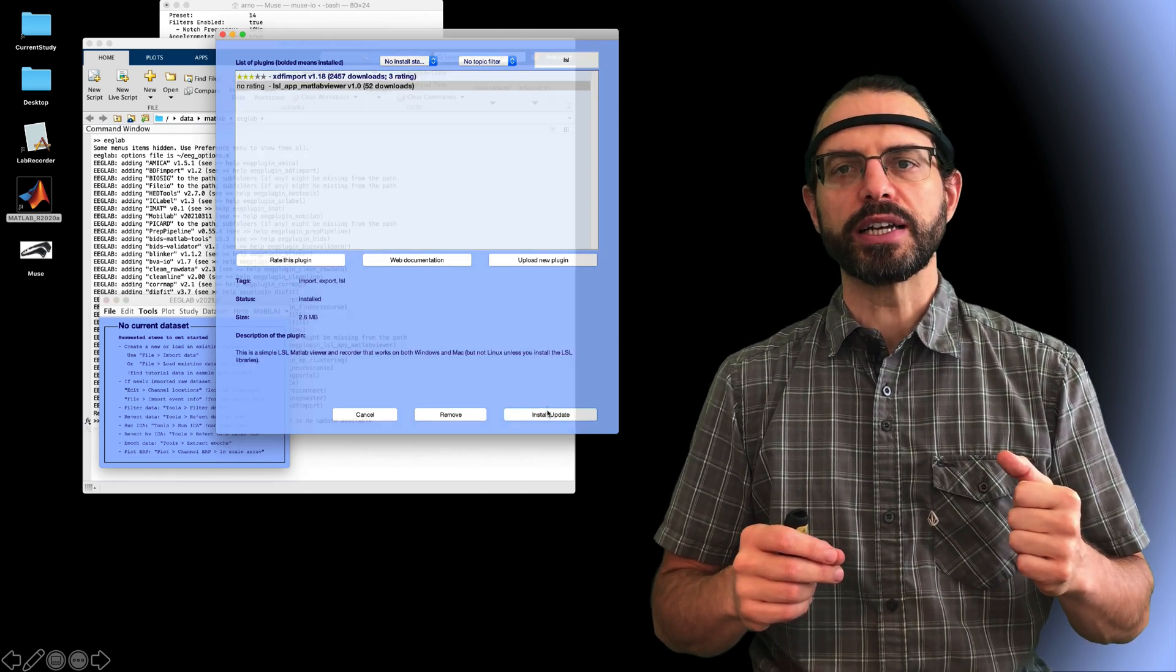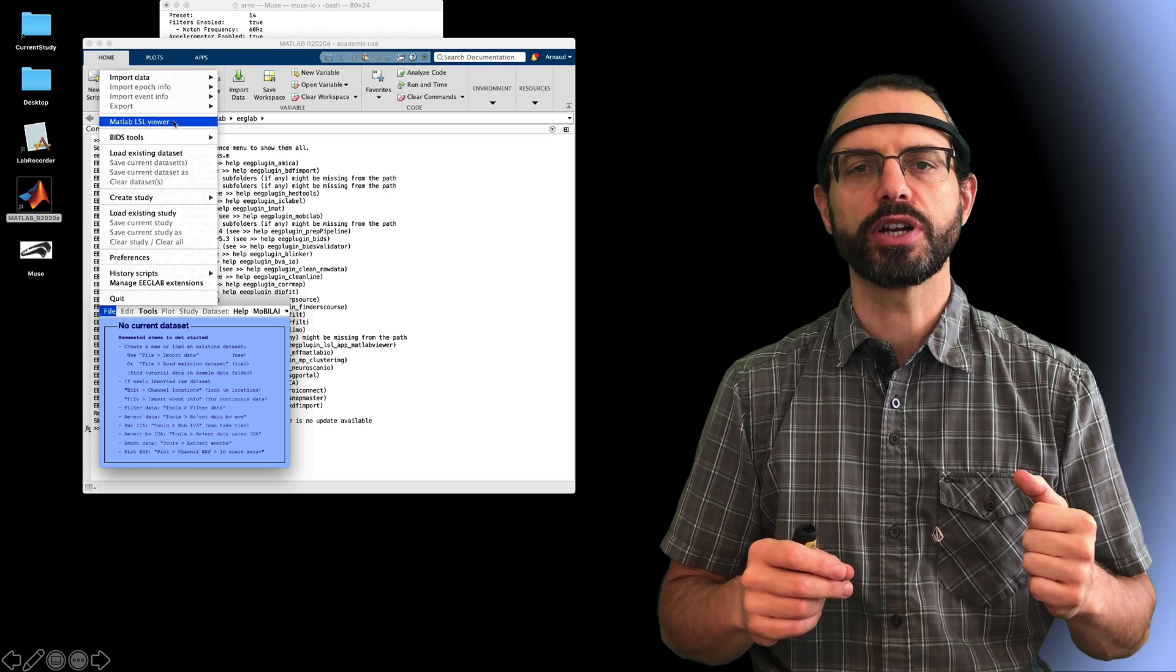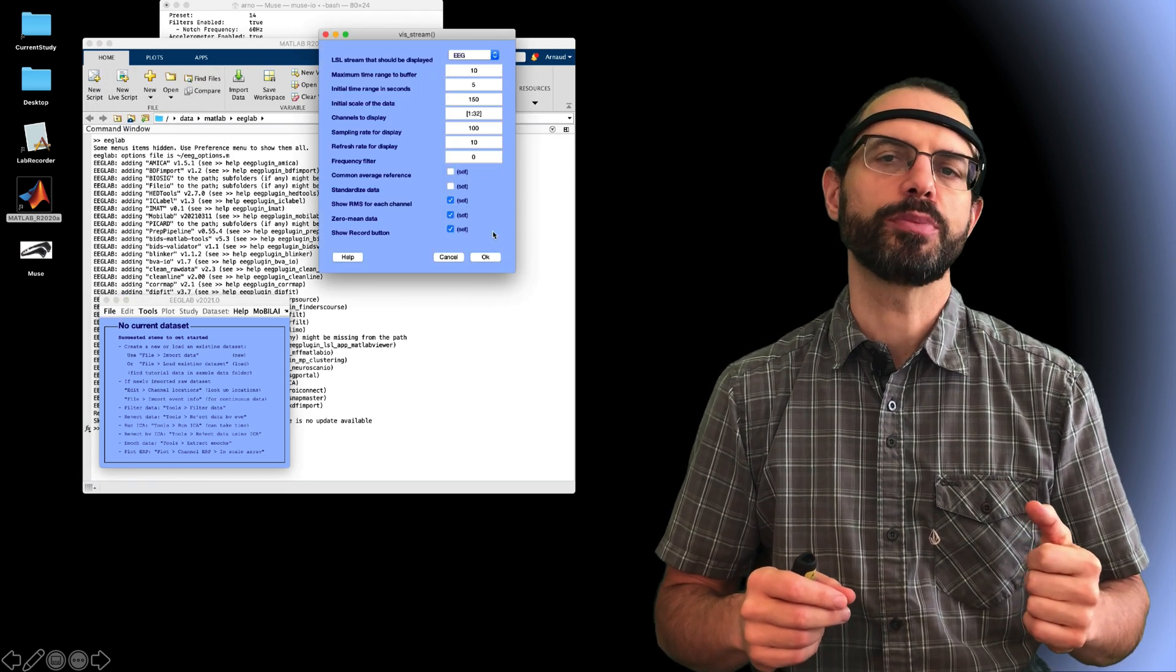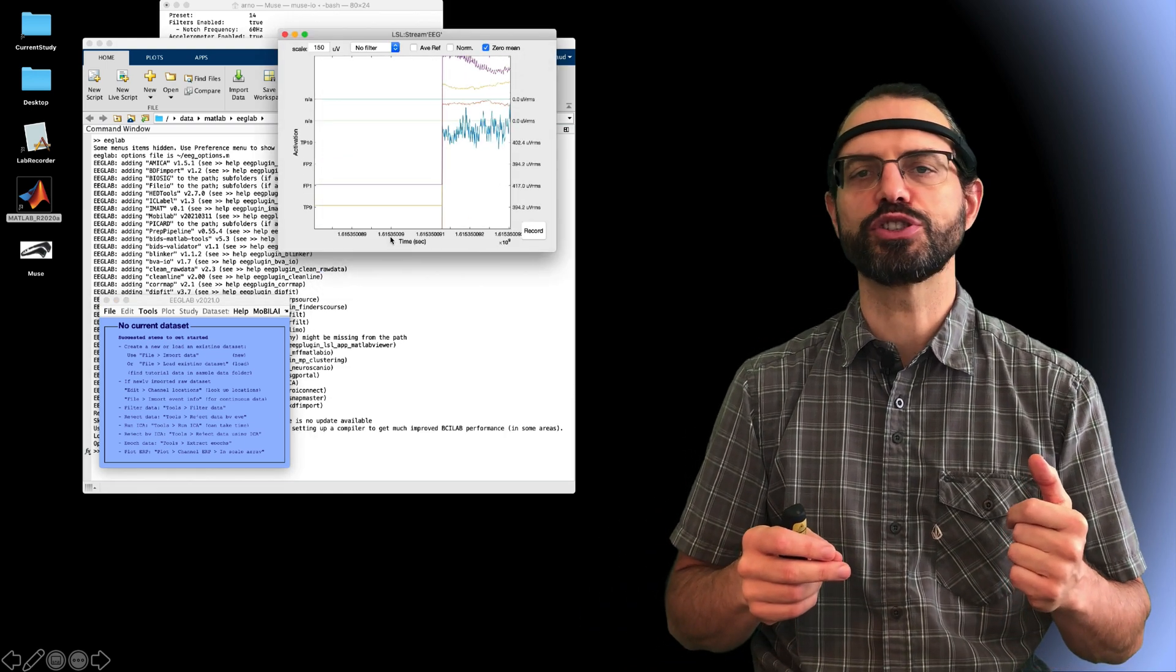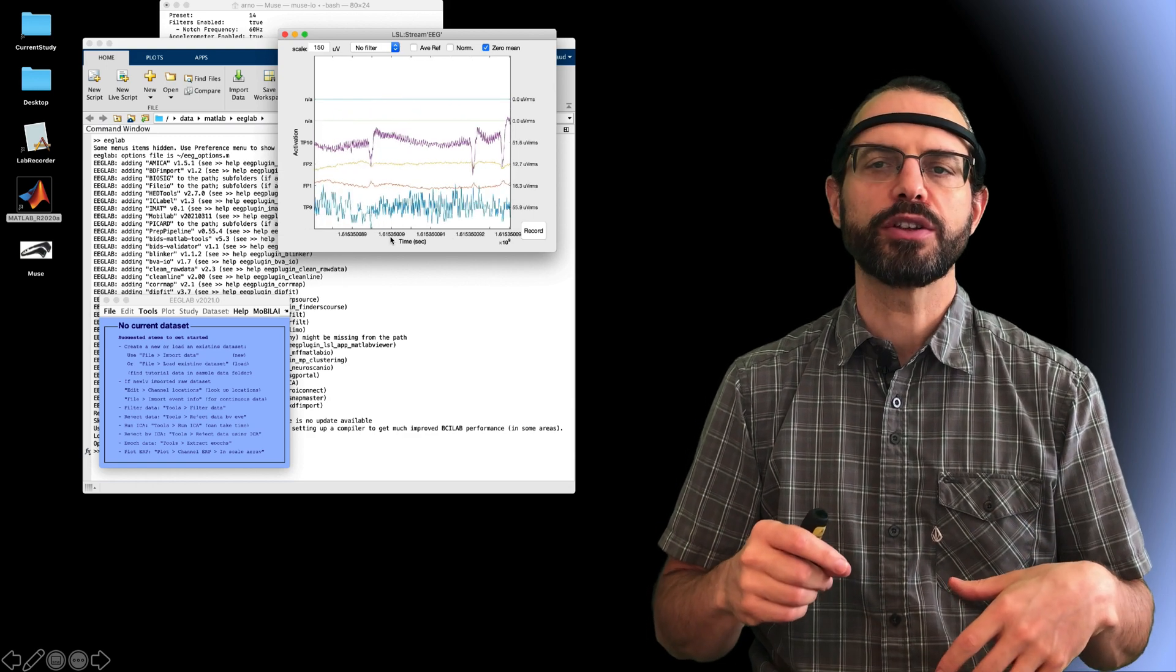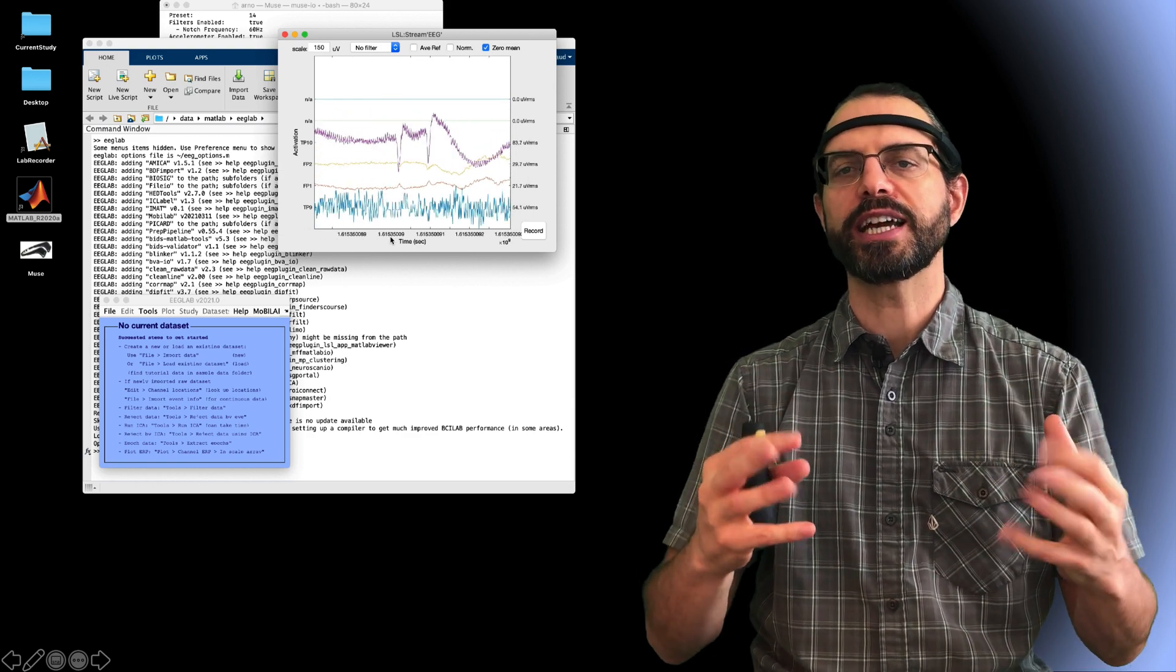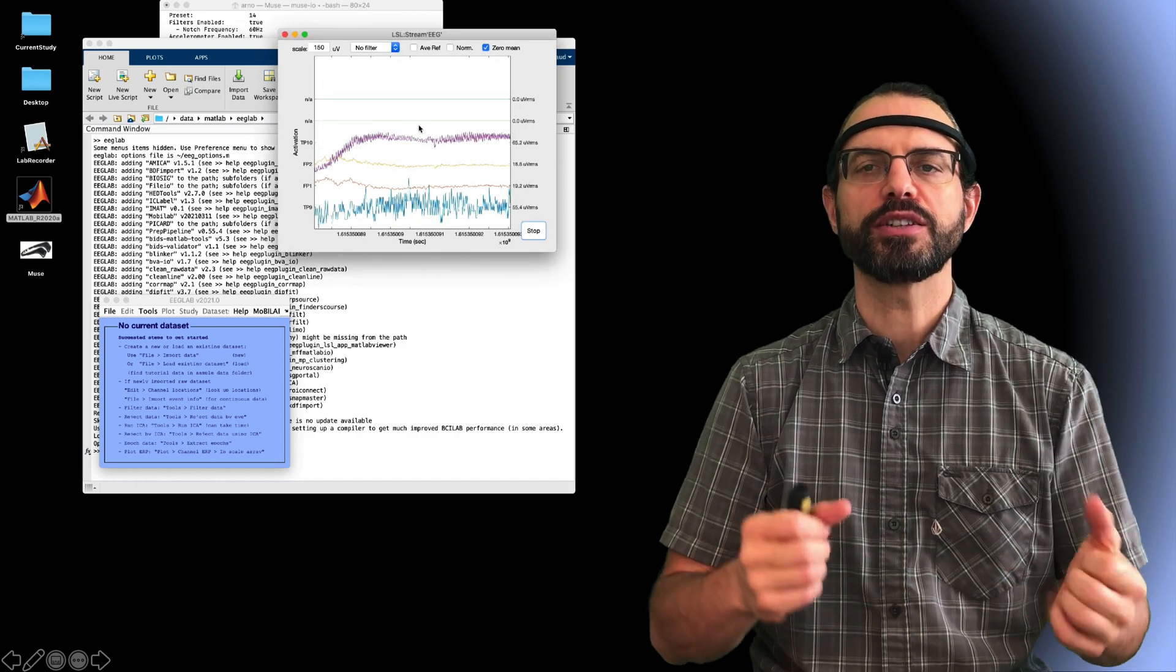After installing the plugin, I select the plugin menu to connect to the LSL stream. It will automatically detect all streams available and I can select the stream if there are several. I will just use the default here. The program connects to the stream and I can now see my data.